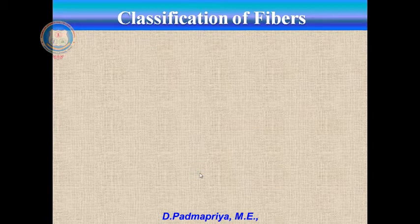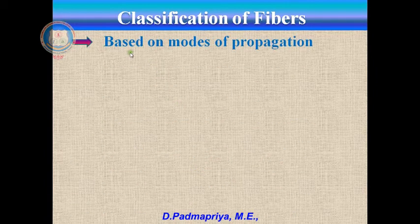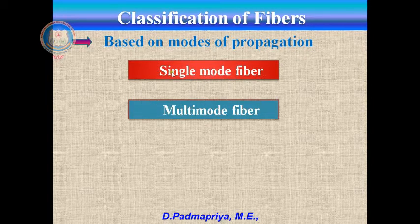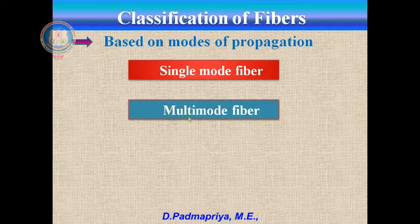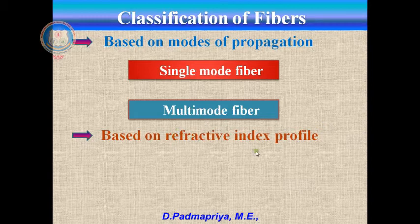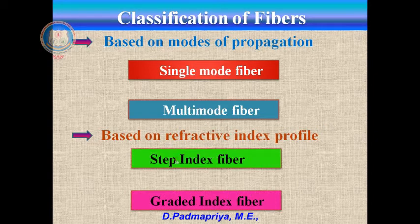Fibers are basically classified based on two parameters. One is based on modes of propagation, under which fibers are classified as single mode fiber and multimode fibers. The second is based on refractive index profile, under which fibers are classified as step index fiber and graded index fiber. Let us see them one by one.